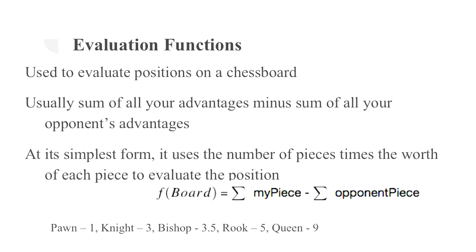The very simplest evaluation function uses piece weights. A pawn is worth 1, a knight is worth 3, a bishop 3.5, and so on. You can add your pieces and subtract your opponent's pieces to get a net value of how good a position is for you.